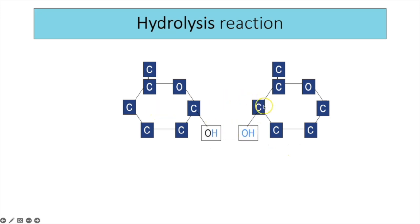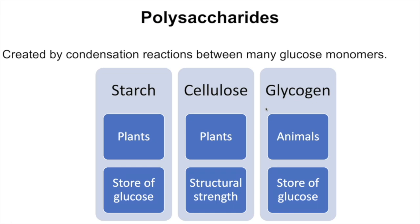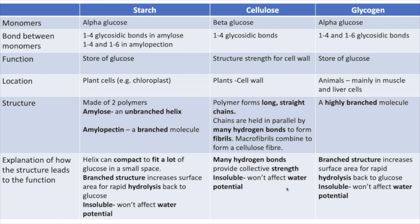Polysaccharides are created by many condensation reactions between many glucose monomers. Starch is found in plants and stores glucose; cellulose is also in plants but provides structural strength; glycogen is found in animals and stores glucose. For starch, the monomer is alpha glucose. Amylose contains only 1-4 glycosidic bonds, forming long straight chains that coil into a helix. Amylopectin contains 1-4 and 1-6 glycosidic bonds — the 1-6 bonds create branches.